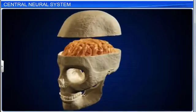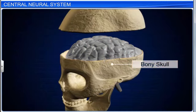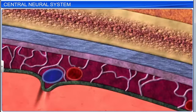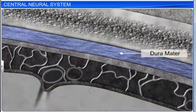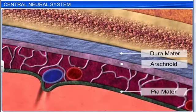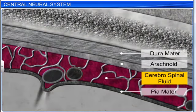The brain lies inside a bony case, the skull, and is well protected by three layers of cranial meninges. These are the outer dura mater, middle arachnoid, and inner pia mater. The space between the arachnoid and pia mater is filled with cerebrospinal fluid, which acts as a shock absorber and prevents the brain tissue from rubbing against other parts.